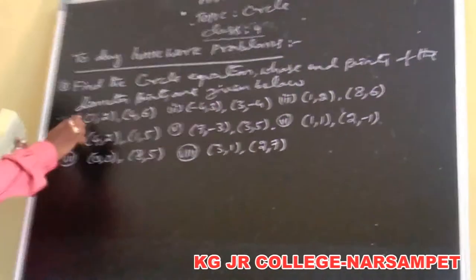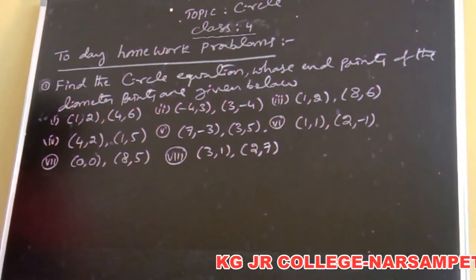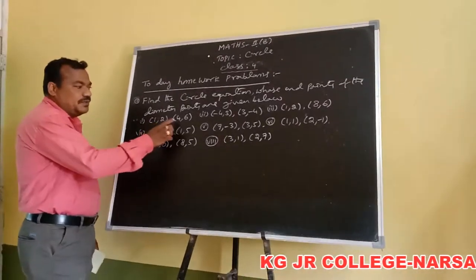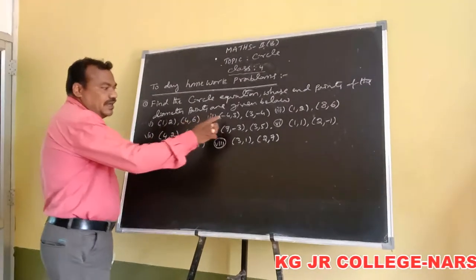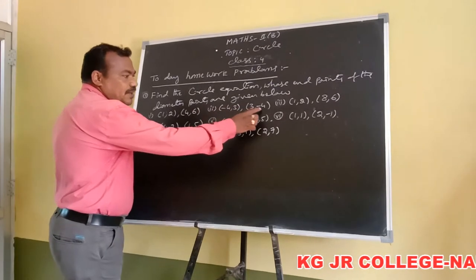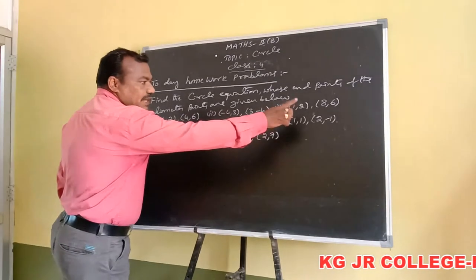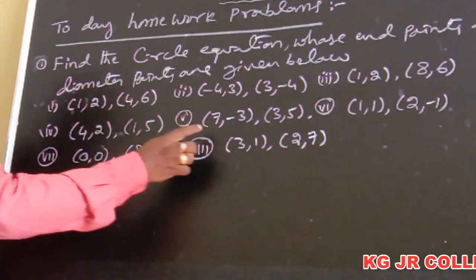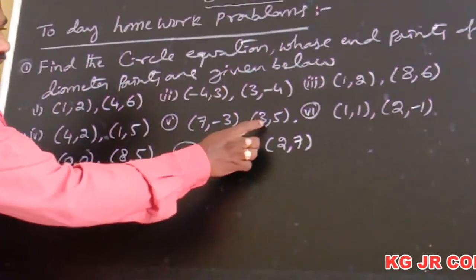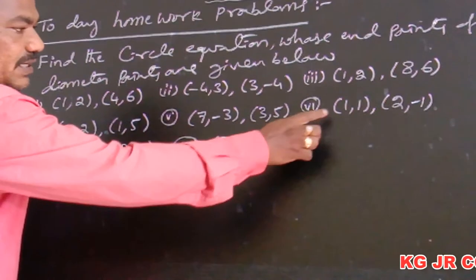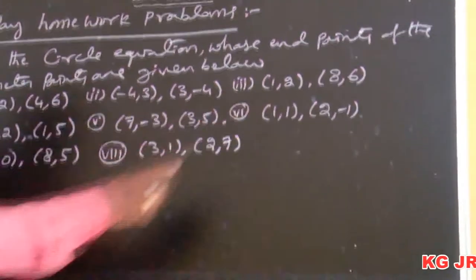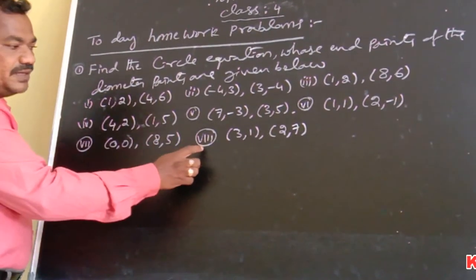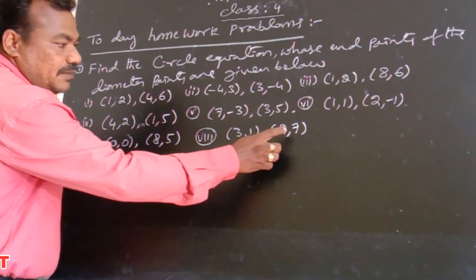Students, these are the endpoints of the diameter of your circle to find the circle equation. First: (1,2) and (4,6). Second: (−4,3) and (3,−4). Third: (1,2) and (8,6). Fourth: (4,2) and (1,5). Fifth: (7,−3) and (3,5). Sixth: (1,1) and (2,−1). Seventh: (0,0) and (8,5). Eighth: (3,1) and (2,7).